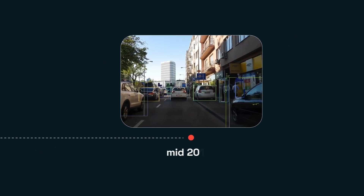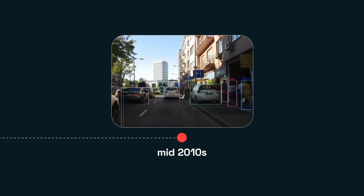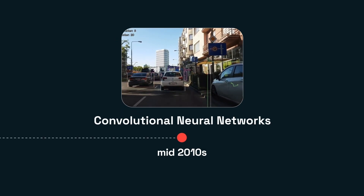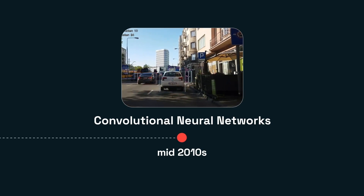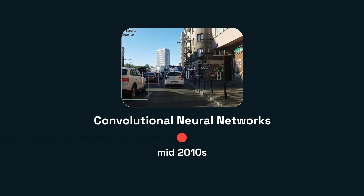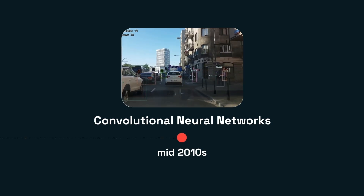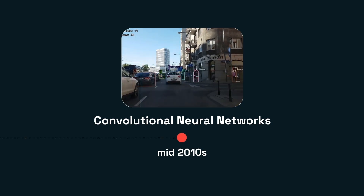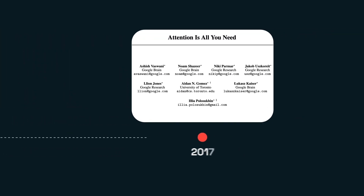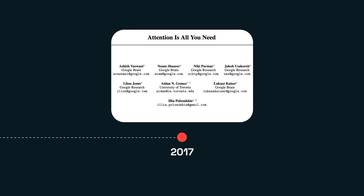Advances in computer vision in the mid-2010s brought deep learning to the forefront with convolutional neural networks, or CNNs. And it wasn't long before language models caught up to the deep learning renaissance. Sequence-to-sequence models and the emergence of attention mechanisms evolved to improve the ability to understand context in language. 2017 marks a milestone in natural language processing, with Google's "Attention Is All You Need," a paper introducing the transformer model.